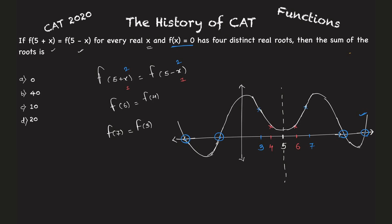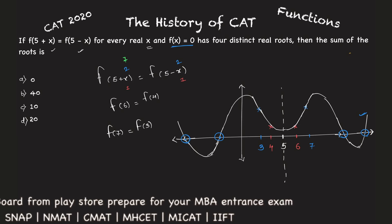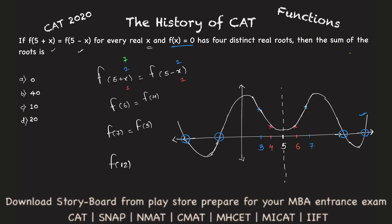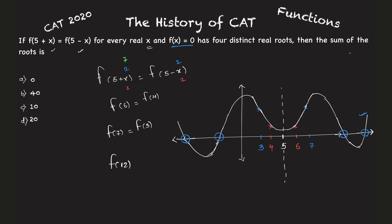If I take now, let's say x as seven, this will become 5+7, f(12). Let me put in some value, let it be seven. So f(12) this becomes, and this also becomes seven. So this is f(-2), which means what? Check out if this is -2, this is 12. f(12) equals f(-2).